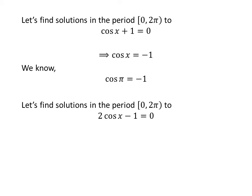Now let us find the solutions to the equation 2 times cosine of x minus 1 is equal to 0 in the period 0 to 2 times pi. Taking minus 1 from the left hand side to the right hand side gives us 2 times cosine of x is equal to 1. Dividing the whole expression by 2 gives us cosine of x is equal to one half.